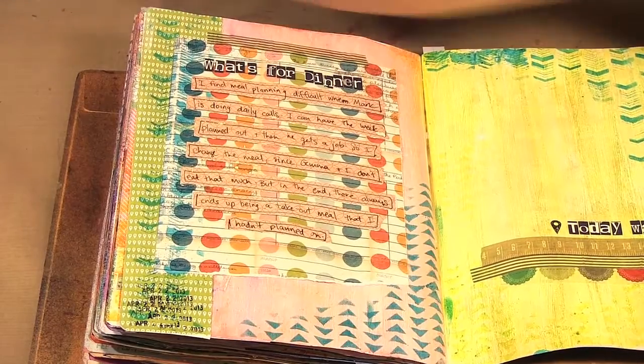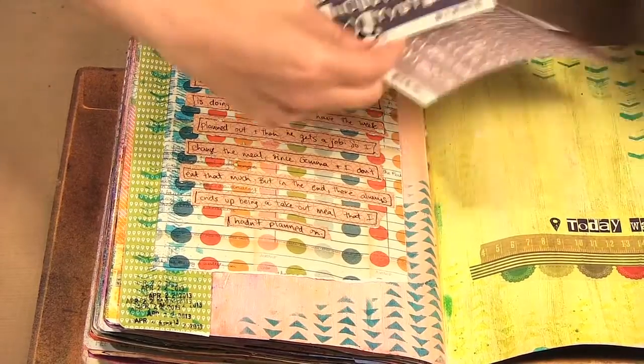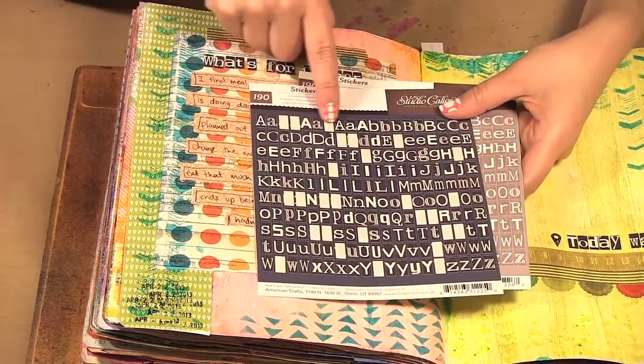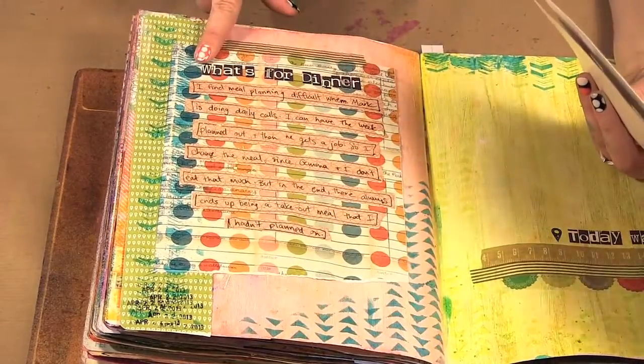These are some little alphabet stickers. I have them in this navy blue and this gray and it's great because there's so many of the same letter so you can use them for different titles.